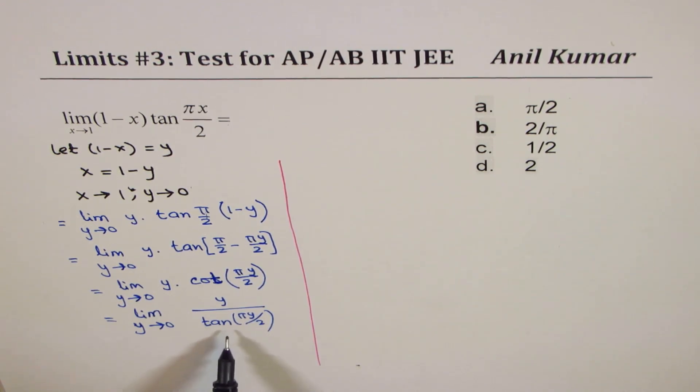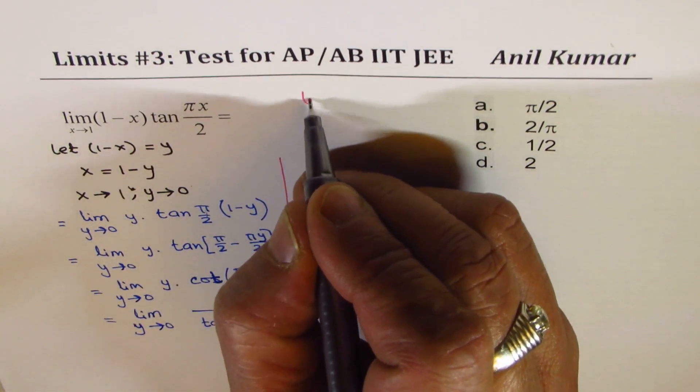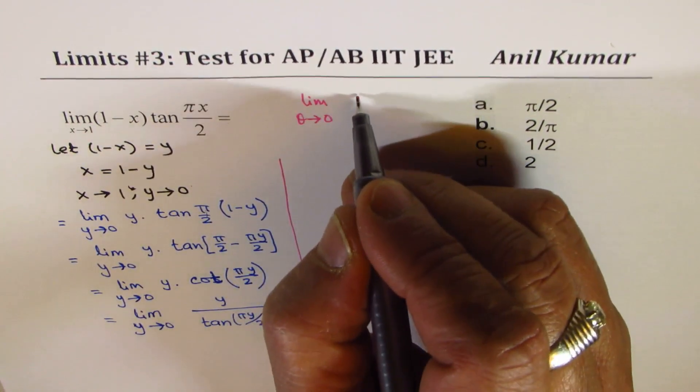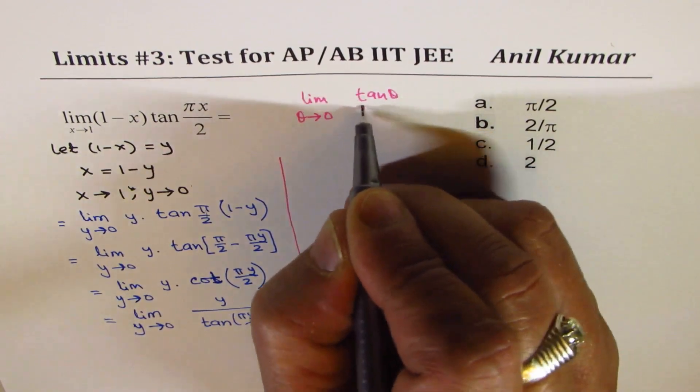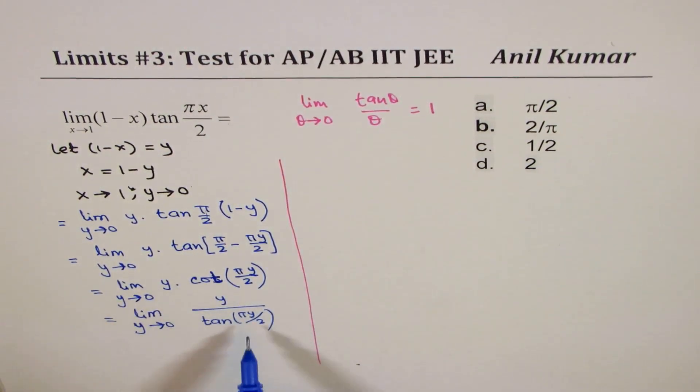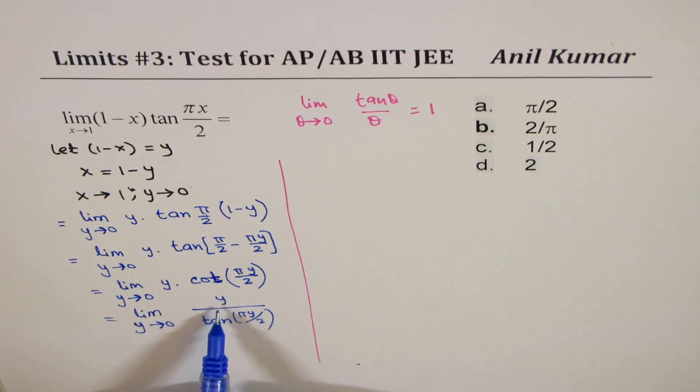Now we know this limit: limit theta approaches 0 for tan theta over theta is 1. So using that fact, we have y here. If I make it pi y by 2, I get 1.